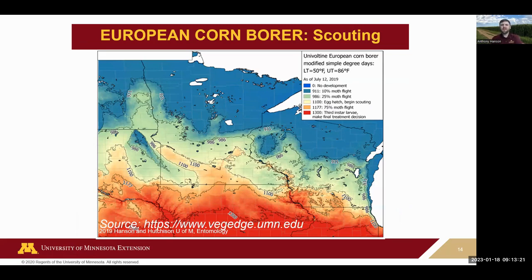We have a map of degree days. You can use degree days to predict roughly when corn borer will be emerging. We have multiple generations — we call the univoltine one basically the second generation showing up, with two others split earlier and later in the season. Check out the Veg Edge website for guidance on when corn borer is expected to be showing up. These are models and predictions — a region-wide look — not a field-specific final answer for when to scout.